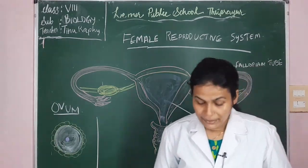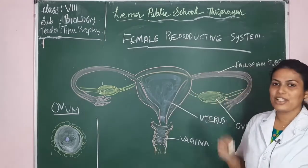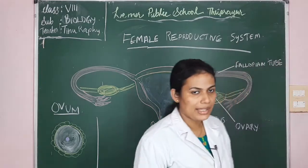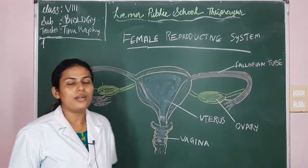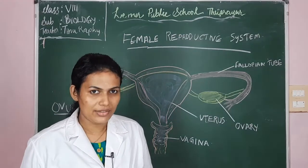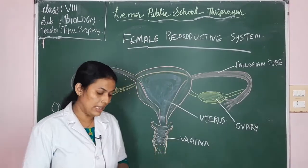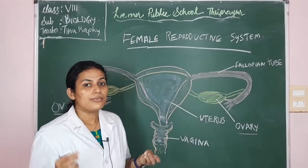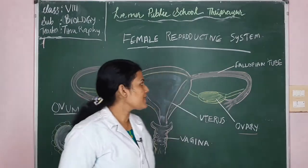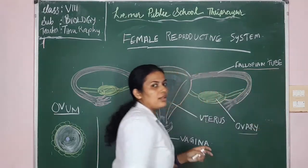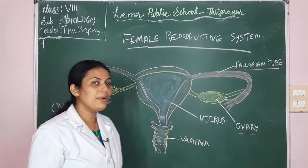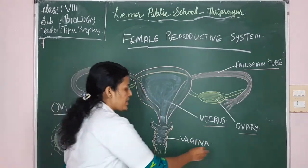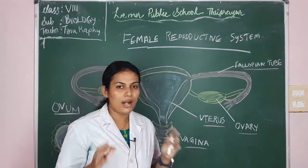In page number 99 of your textbook, the female reproductive system is given. The teacher has represented the diagram on the board. The parts of the female reproductive system are: first — ovary, second — fallopian tube, third — uterus, and fourth — vagina. Now let's learn about these parts in detail.